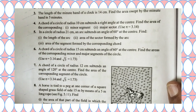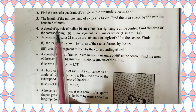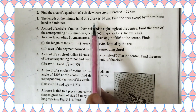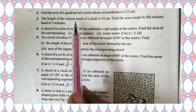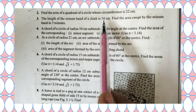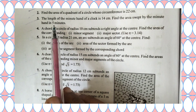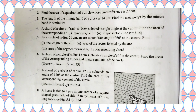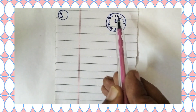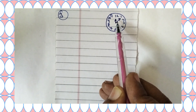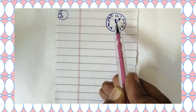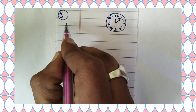Now let us move to the third question. The length of the minute hand of a clock is 14 centimeter. Find the area swept by the minute hand in 5 minutes. The minute hand length is equal to the radius, so radius equals 14 cm. We need to find the angle theta swept in 5 minutes.